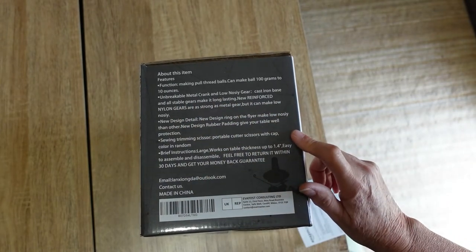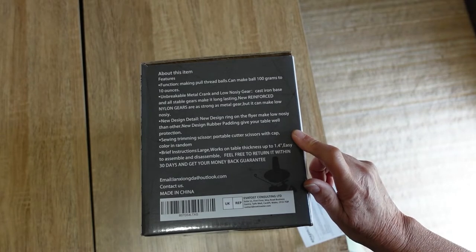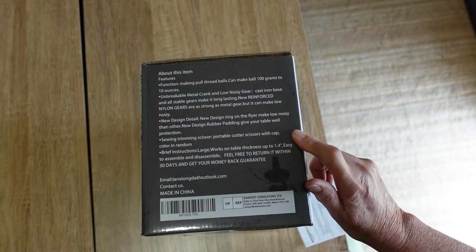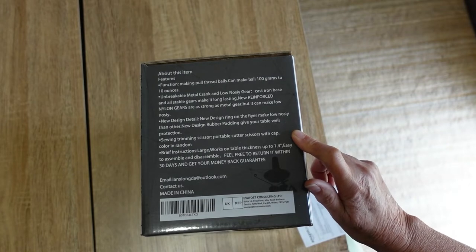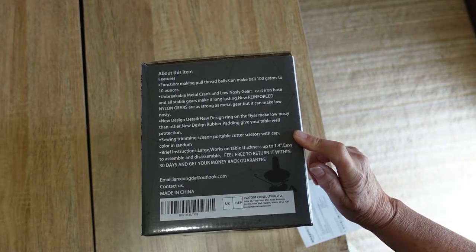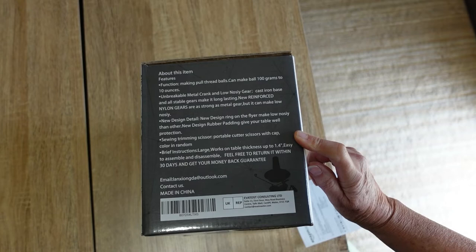New design detail: new design ring on the flyer makes low noisy than other. New design rubber padding give your table well protection. So padding for the clamps, hopefully. Sewing trimming scissors, portable cutting scissor with cap, color in random.